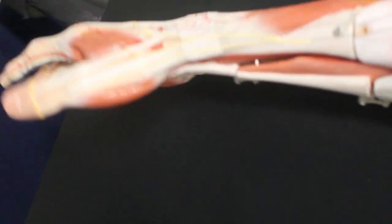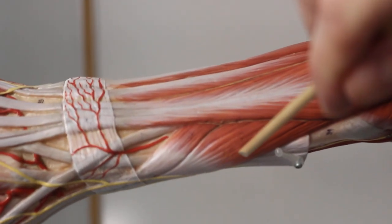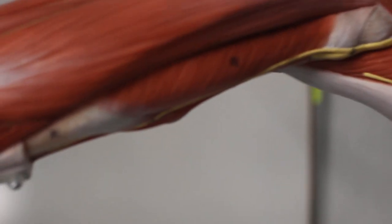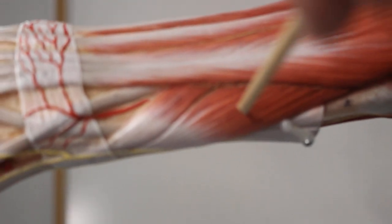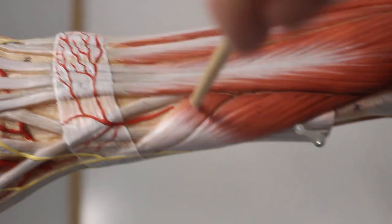Then we have up at the thumbs, go back to this one, up at the thumbs, abductor pollicis and, let me double check that name. Yes, abductor pollicis longus, abductor pollicis longus, and above it extensor pollicis longus.